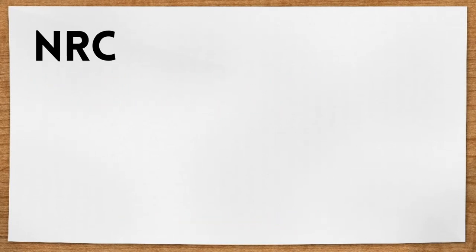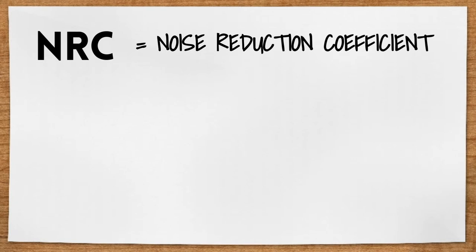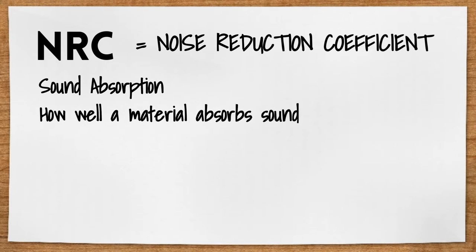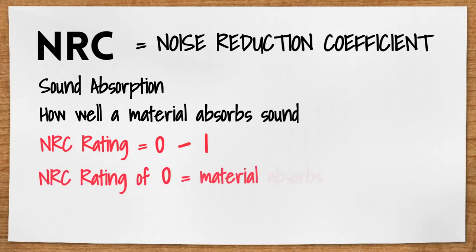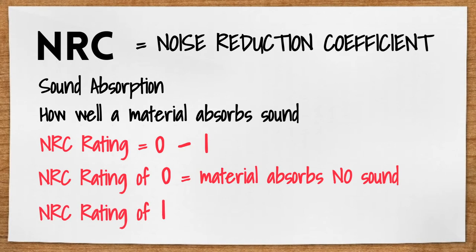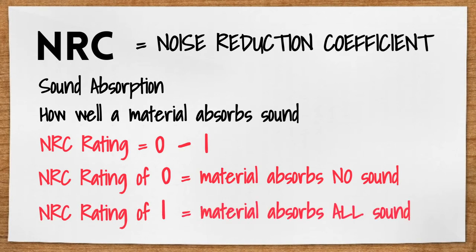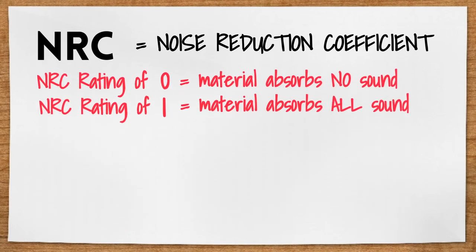Now let's look at NRC. NRC stands for Noise Reduction Coefficient. NRC has to do with sound absorption — basically how well a material can absorb sound and how much quieter a material can make your space. NRC ratings are based on absorption and range from 0 to 1. An NRC of 0 means the material absorbed no sound at all and reflected all of it back into the space, which would be quite noisy. An NRC of 1 means the material absorbed all of the sound and reflected nothing. The higher the NRC, the better the product is at absorbing the sound.